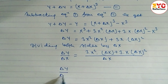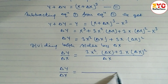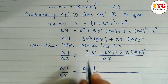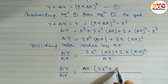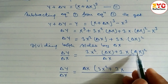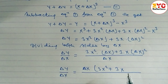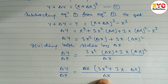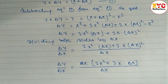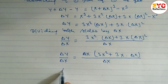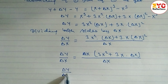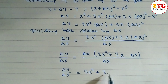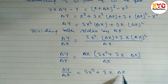We take del x common from the right-hand side. When we take del x common, what remains is del y by del x is equal to del x times 3x squared plus 3x del x. The del x cancels from numerator and denominator, so we have del y by del x is equal to 3x squared plus 3x del x.